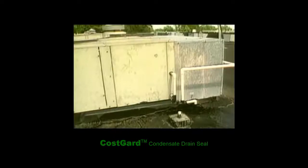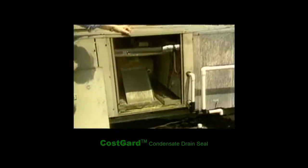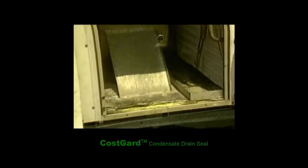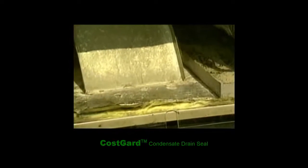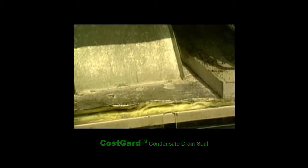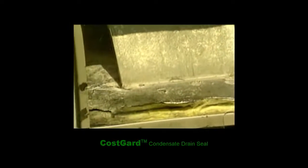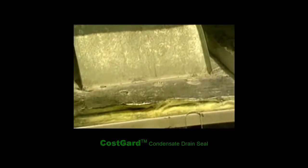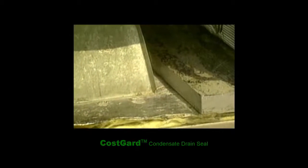A typical field installation of the CostGuard condensate drain seal is shown here. By means of a transparent panel, you can see that no condensate blowing is taking place. This unit was wet inside and covered with mold before the CostGuard condensate drain seal was installed three years prior. Now it is dry and there is no visible mold.